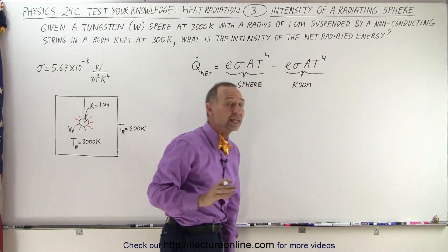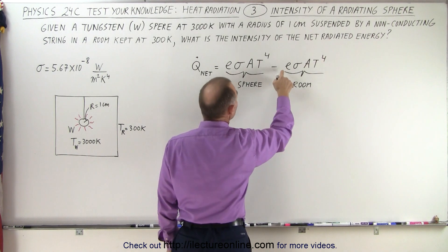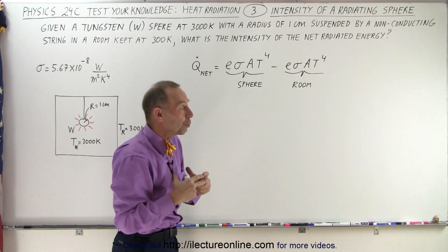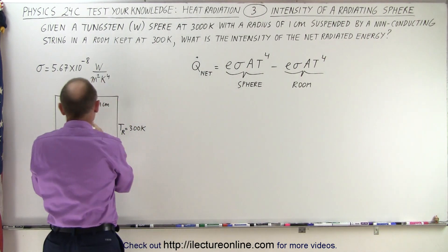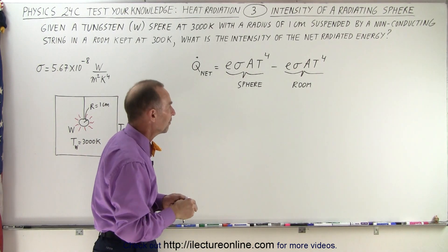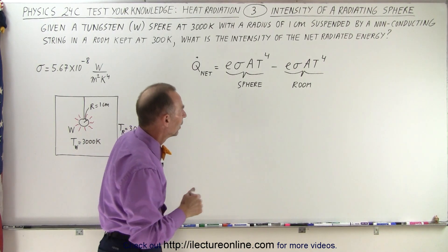Now, we have to be careful here that the emissivity here will be the emissivity of the sphere, because the amount of heat that it receives from the room will depend only on the emissivity of the sphere, of course, assuming that the walls will radiate at nearly an emissivity of about equal to 1.